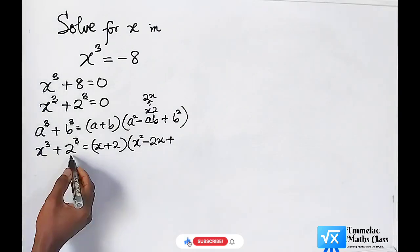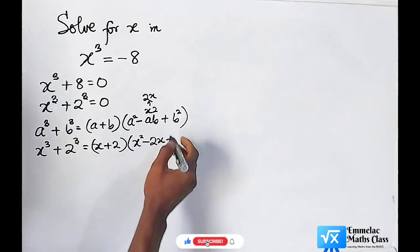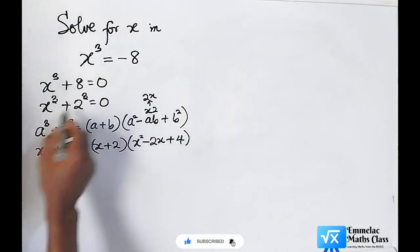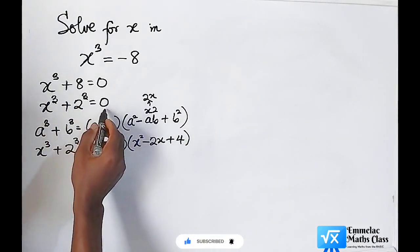Since b is 2, the square of it will give us 4. Take note that all the equation equals 0.